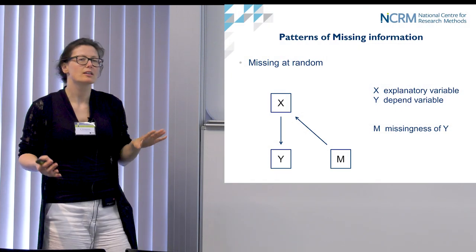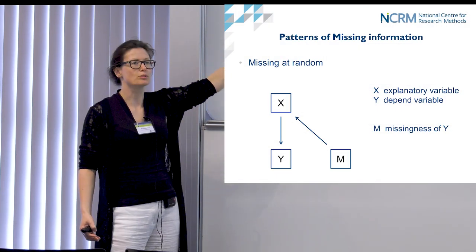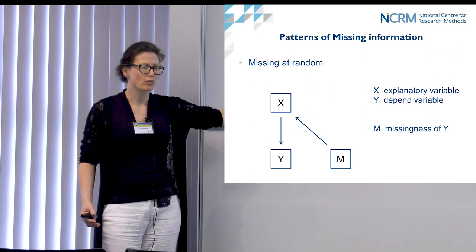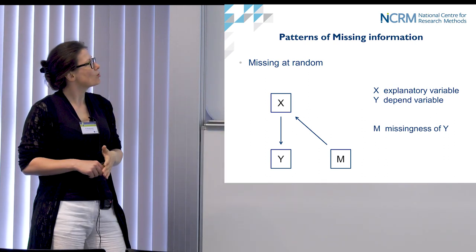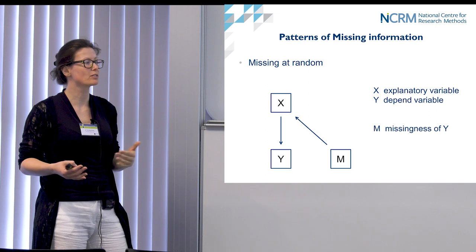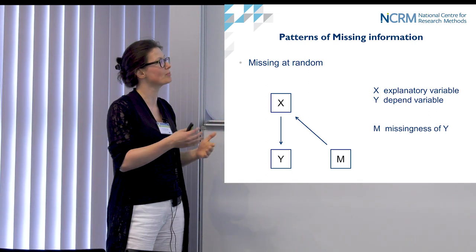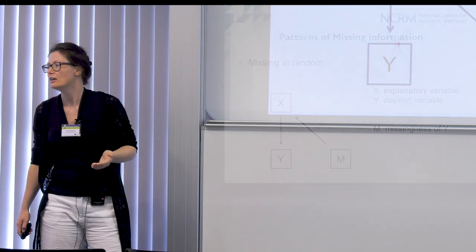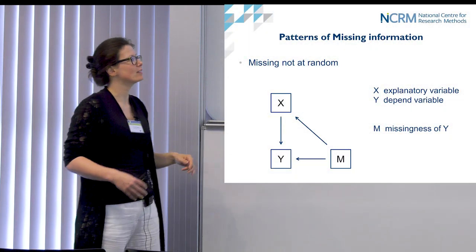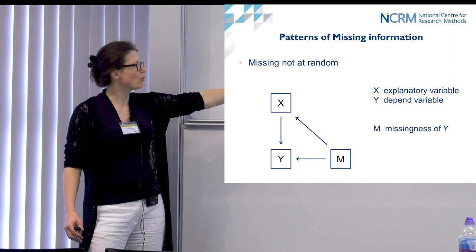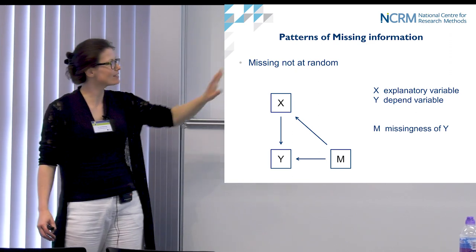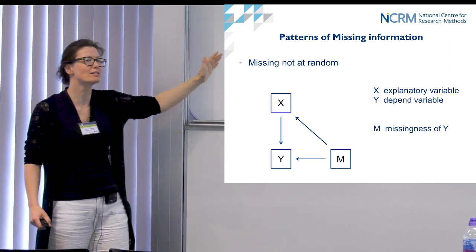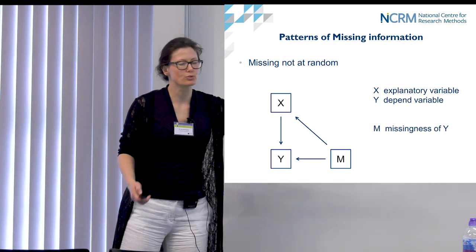However, if the missing pattern is related to some of the explanatory variables but still independent from our outcome variable, this is called missing at random (MAR). If we take those explanatory variables where missingness depends on into account and put them into our model, we pretty much adjust for the missingness bias. It becomes really problematic when missingness is also related to our outcome variable — only including explanatory variables in your model will not compensate for that bias.